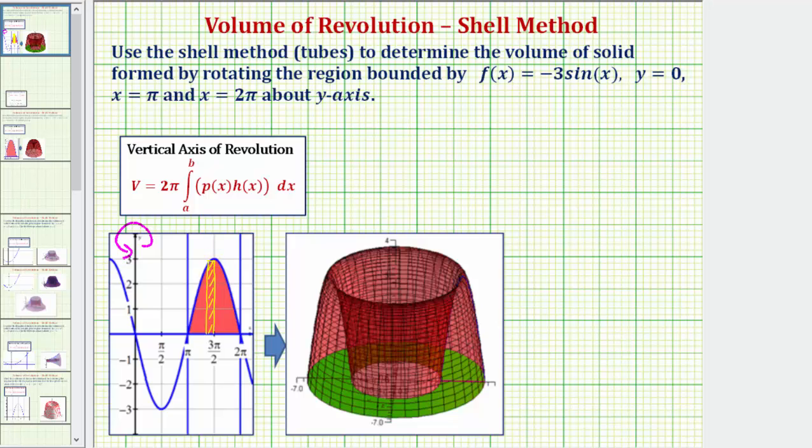So using the representative rectangle, the radius function would give us a distance from the rectangle to the axis of rotation, which would be this distance here. This is a horizontal distance equal to x, and therefore rho(x) is equal to x. The height of the rectangle would be this distance here. Notice how this height would be given by the y value of the function, and because y equals f(x), the height function h(x) is equal to negative three sine x.